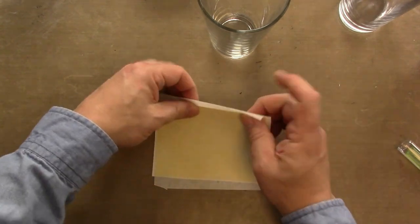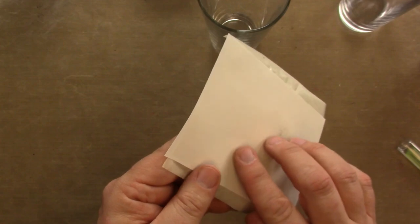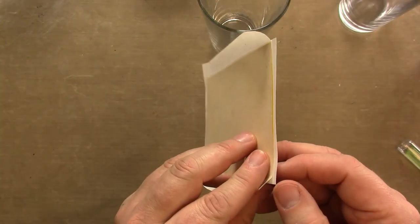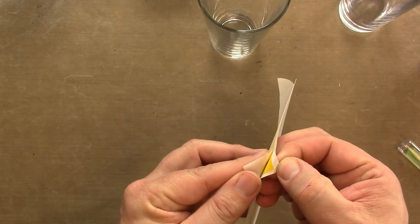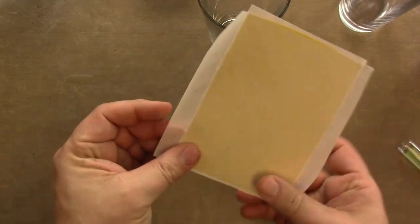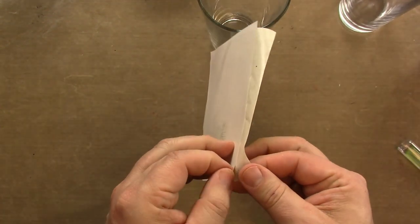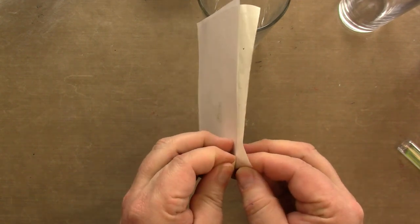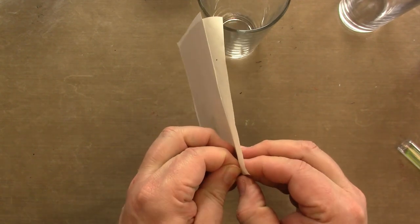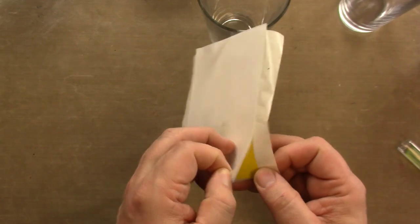What we have right now is kind of a sandwich. There's a piece of carrier sheet on the back, my vinyl is sandwiched in the middle, and then I have the transfer sheet on the top. Now what I want to do is take this vinyl off of the carrier sheet and get it to adhere to that transfer sheet.